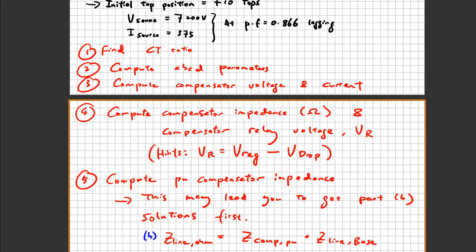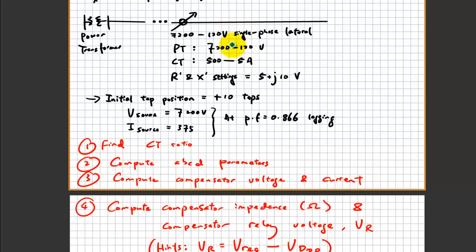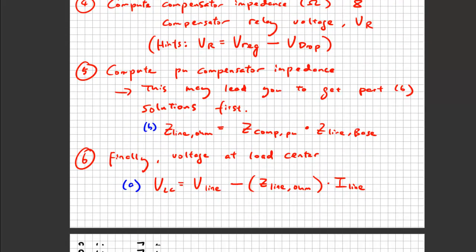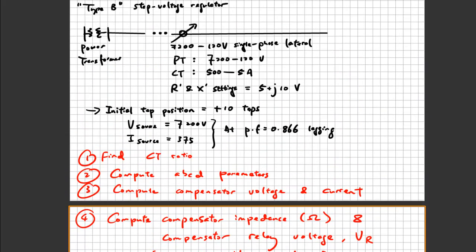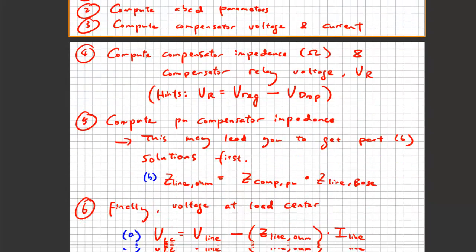Once you find Z_line in ohm units, you can easily find the voltage at the load center: V_load_center equals V_line minus V_impedance, where V_impedance comes from the line impedance multiplied by the line current. That lets you solve two parts of this problem right away. It's a procedural process you have to go through based on any current condition. The final step you can predict is finding what tap adjustments are needed based on the current tap position — if this is tap plus 10, you determine what adjustments are required.